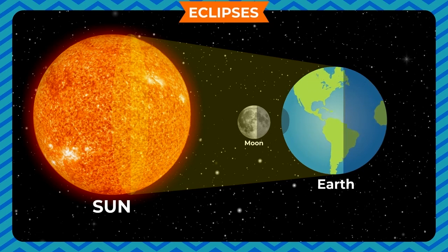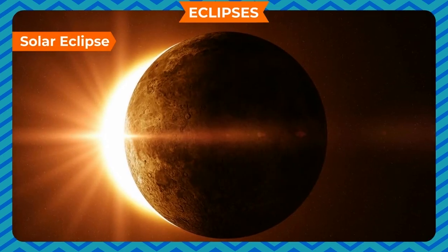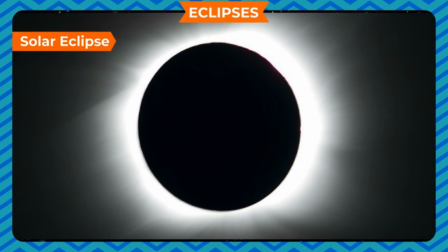There are two types of eclipses: Solar Eclipse and Lunar Eclipse. Solar Eclipse — when the sun, the moon and the earth come along a straight line in such a way that the moon comes between the sun and the earth, the light of the sun is obstructed by the moon. The shadow of the moon falls on some portion of the earth, and the sun is not visible from these portions. This phenomenon is called solar eclipse.